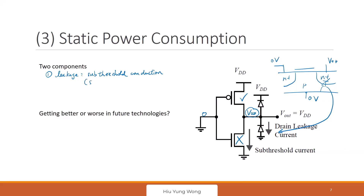The first leakage is a problem due to the so-called short channel effect — when you have a shorter gate length, the leakage will be larger. The second is the reverse-biased diode junction leakage. So you have these two types of leakage. When we go to future technology, is it getting worse or getting better? Generally it is worse. For leakage path one, it gets worse because the gate length LG is shorter.